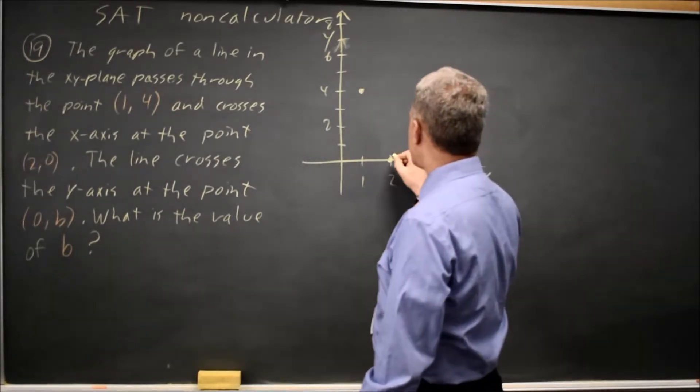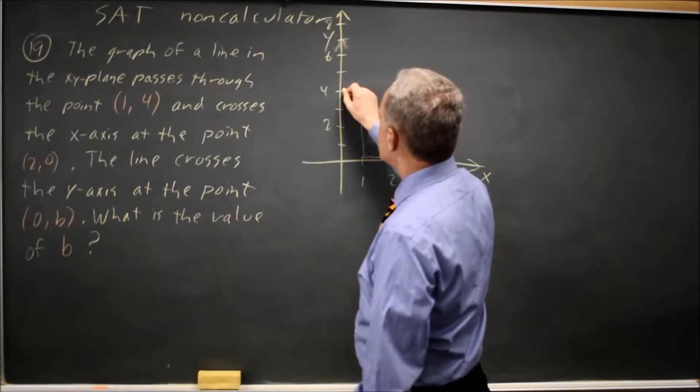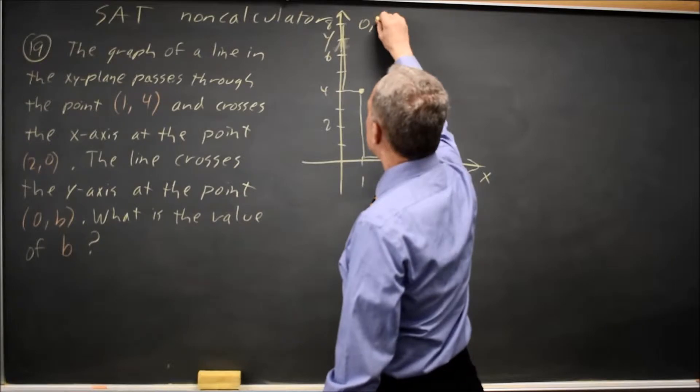I can informally find, I go left 1 and up 4, so to get to the y-intercept I'll go left 1 more and up 4 more to the point x equals 0, y equals 8.